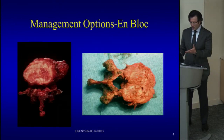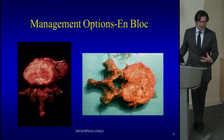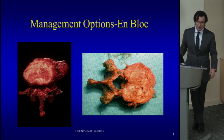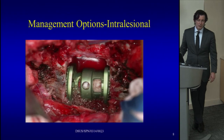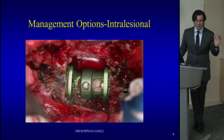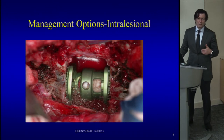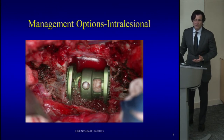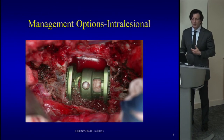The en bloc resection involves removing the vertebra in one piece. For intralesional resection, this is a patient who had a vertebrectomy — you go in, use your drill, drill the vertebral body out, and spread the tumor, but that's okay because they have metastatic disease. It makes no difference. You're there to restore mechanical stability and decompress the cord. An anterior transthoracic approach can be used, placing a cage to reconstruct the vertebral body.